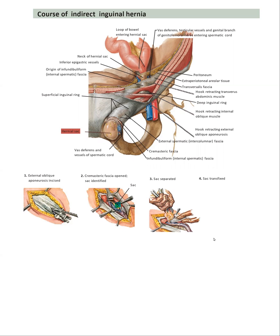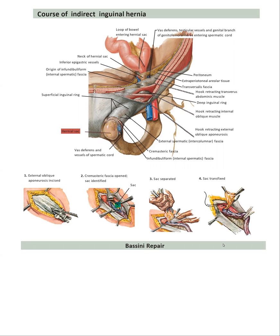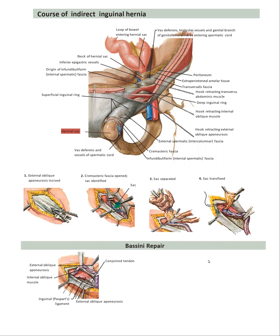And then the sac will be transfixed and divided. We have the idea of the Bassini repair. As you see here, it is approximation of the internal oblique muscle and conjoined tendon to the inguinal ligament underneath the cord. The cord is moved upward, and then the conjoined tendon, which is the internal oblique and transversus abdominis, will be sutured to the inguinal ligament underneath the cord.